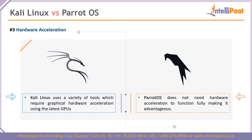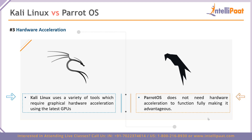Number three in the comparison is hardware acceleration. Kali Linux makes use of a wonderful variety of tools, and most of these tools actually require graphical hardware acceleration, provided by the latest graphical processing units. It's not a firm requirement to have a powerful GPU, but Kali does require certain hardware acceleration to function at its foundation. Parrot OS, on the other hand, does not require any sort of hardware acceleration and can function fully without it — which in my opinion makes Parrot OS the newer and greater operating system for security purposes.